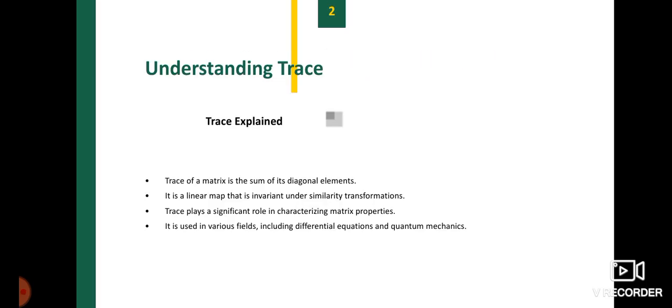Now, understanding the trace. The trace of a matrix is the sum of its diagonal elements. It is a linear map that is invariant under similarity transformations.